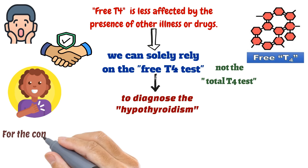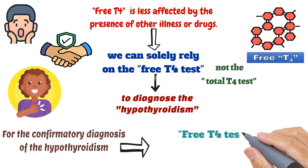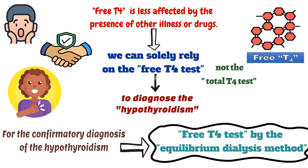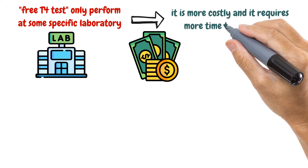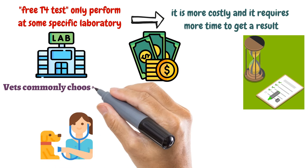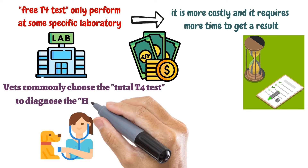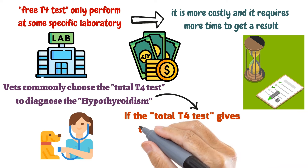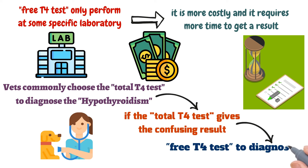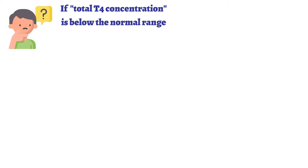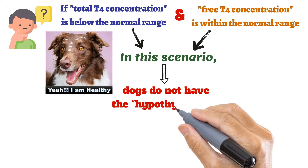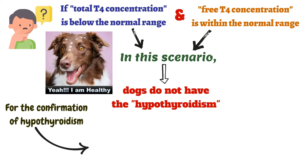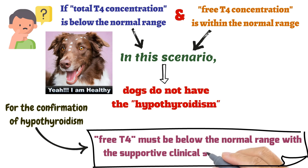For a confirmatory diagnosis of hypothyroidism, free T4 by the equilibrium dialysis method is required. However, this test is only performed at specific laboratories, is more costly, and takes more time. Most vets commonly use total T4 first, resorting to free T4 when results are confusing. If total T4 is below normal but free T4 is within normal range, the dog does not have hypothyroidism. For confirmation, free T4 must be below normal with supportive clinical signs.